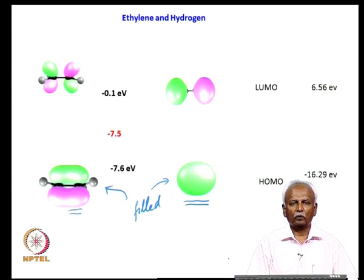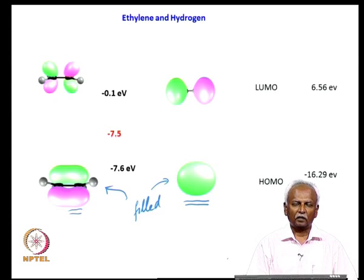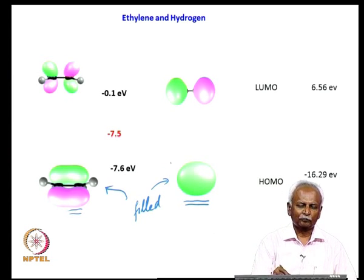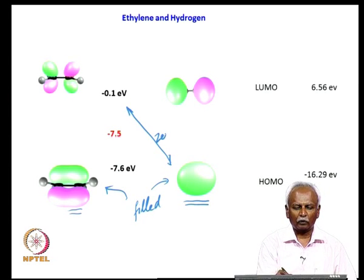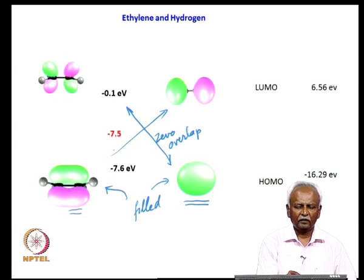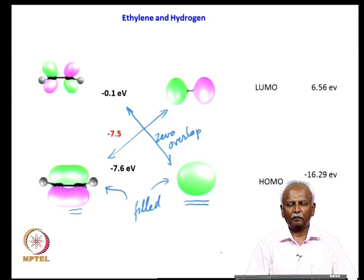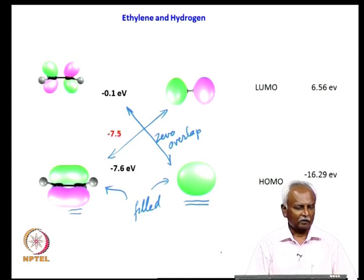Both orbitals are filled, and as a result the overlap of these orbitals would actually lead to a repulsive situation. What you need is overlap between the filled orbitals of one reactant with the unfilled or empty orbitals of the second reactant and vice versa. This is not possible because the LUMO of ethylene and the HOMO of hydrogen show zero overlap. The same holds for the filled orbital of ethylene and the empty orbital of hydrogen — the reaction cannot proceed by a cycloaddition type mechanism without a catalyst.